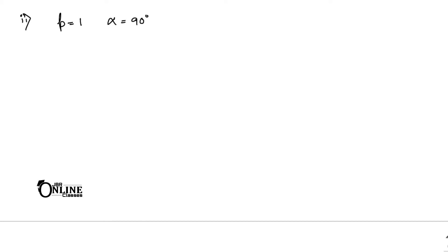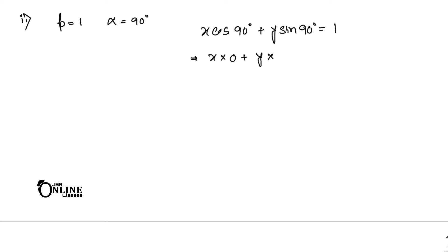Now the next sub-case: p = 1 and alpha = 90 degrees. Using the formula x·cos90° + y·sin90° = 1. Since cos90° = 0 and sin90° = 1, we get x·0 + y·1 = 1, so the answer is y = 1. It's very easy.